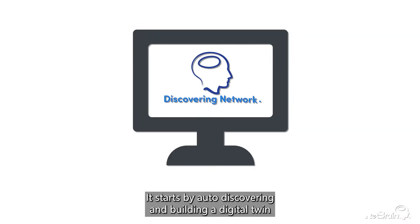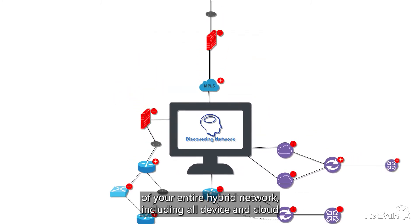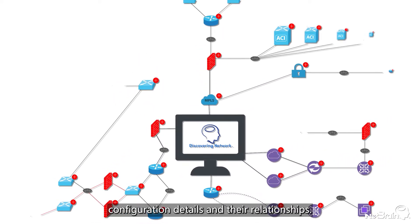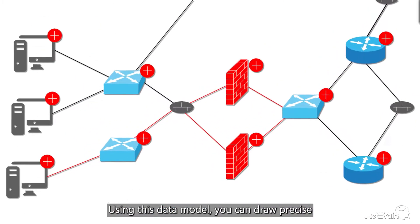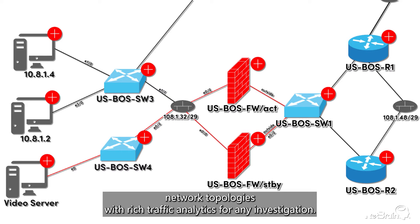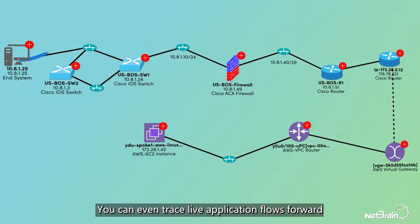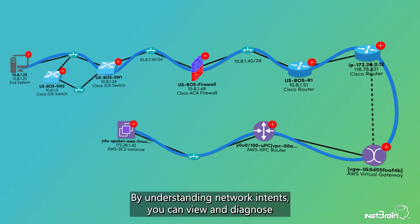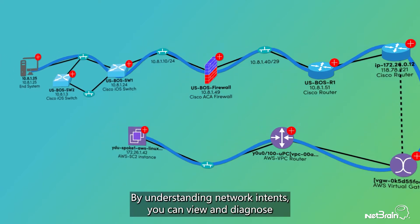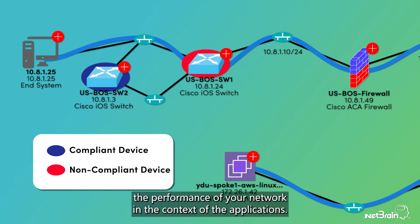It starts by auto-discovering and building a digital twin of your entire hybrid network, including all device and cloud configuration details and their relationships. Using this data model, you can draw precise network topologies with rich traffic analytics for any investigation. You can even trace live application flows, forward and backward, to address performance issues in real time. By understanding network intents, you can view and diagnose the performance of your network in the context of the applications.